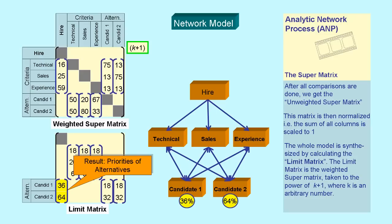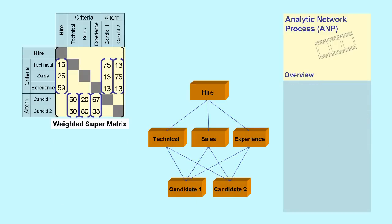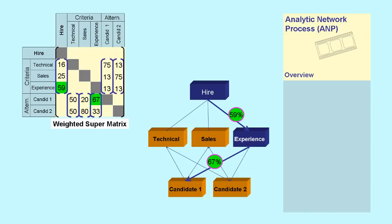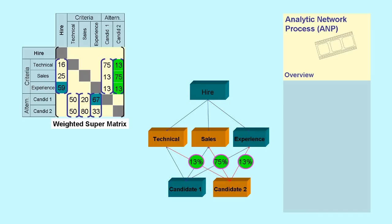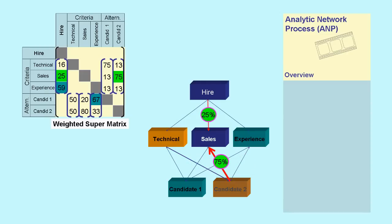Now, in the network model, the result speaks for the selection of candidate 2 instead of candidate 1. What is the reason? Though both candidates have the required experience — candidate 1 slightly more than candidate 2 — in the hierarchical model, experience is given a relatively high weight, resulting in the slightly higher ranking for candidate 1. In the network model, we also look at each candidate's skills independently. Now we see the outstanding sales skills of candidate 2, and sales skills get more weight in the decision than the excellent technical skills of candidate 1.